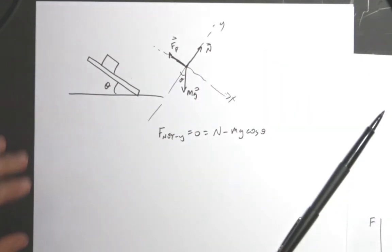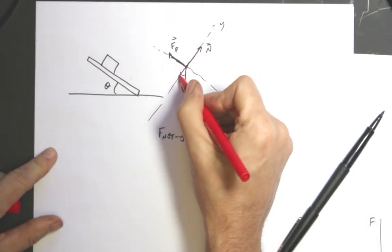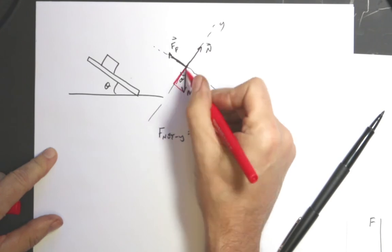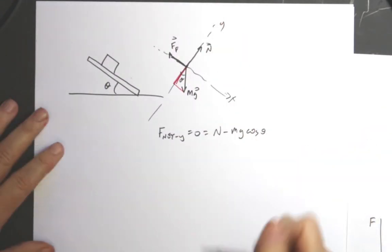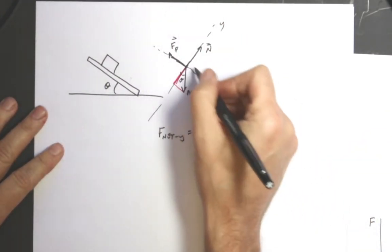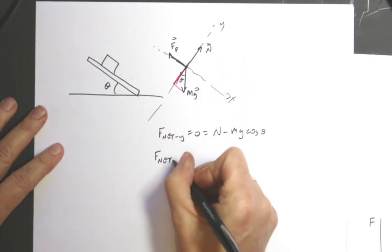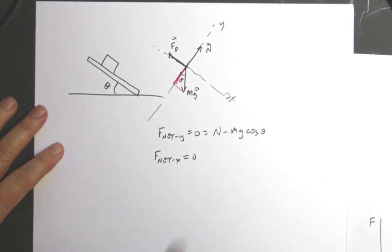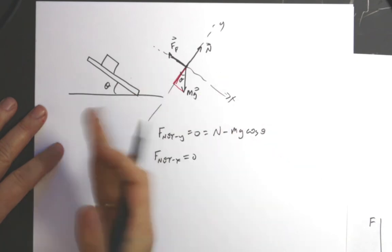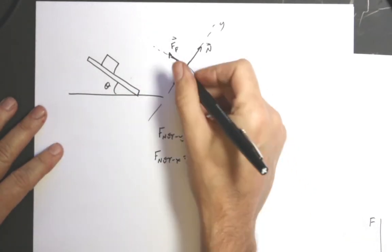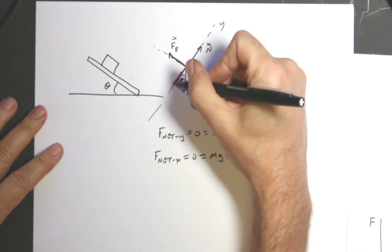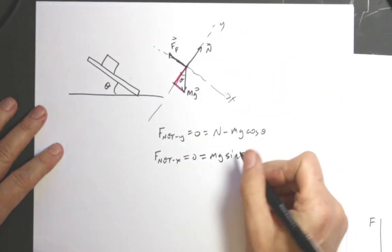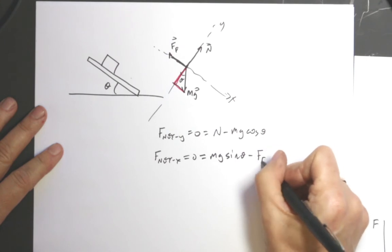In the y direction I have F_net y equals 0, right, because it's not accelerating this way. So I have N minus mg cosine theta, because if I look at this right triangle, the adjacent side is my vertical component of the gravitational force. And then in the x direction, F_net x equals 0. It's right at the moment it starts to slide. So I have mg sine theta, that's this component of the gravitational force in the x direction, minus the frictional force is equal to 0.